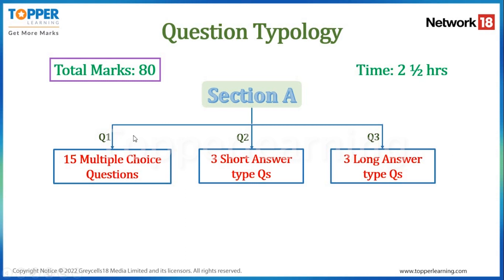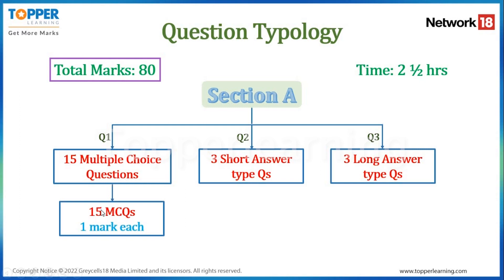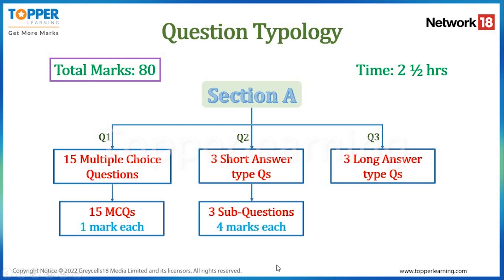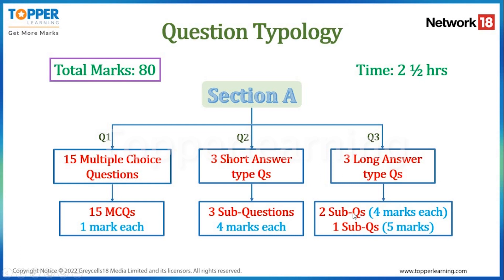Section A will have 3 questions. There will be 15 multiple choice questions worth 1 mark each, totaling 15 marks. Question 2 will have 3 short answer type sub-questions, each of 4 marks, totaling 12 marks. Question 3 will also have 3 sub-questions: 2 sub-questions of 4 marks each and 1 sub-question of 5 marks, totaling 13 marks. So this is how your Section A will look.